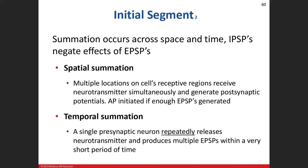There are two types of summation. Spatial summation means you have multiple locations throughout the receptive segment — including dendrites and the soma — simultaneously receiving neurotransmitters from different neurons. Multiple presynaptic neurons from different areas release their neurotransmitters simultaneously onto the receptive segment, generating graded potentials. Hopefully there will be enough EPSPs to initiate our action potential.